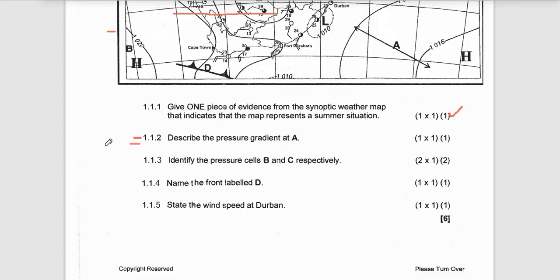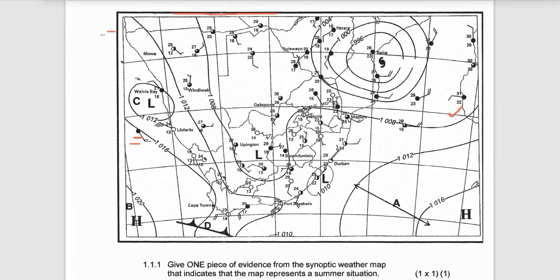Let's move to 1.1.2: Describe the pressure gradient at A. You can see the isobars at A are at least far from each other — far apart. You know that when isobars are far from each other, it shows that the pressure gradient is gentle. So at A, the pressure gradient is gentle. When isobars are close to each other, it's steeper.